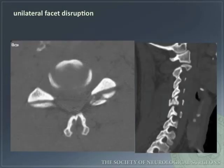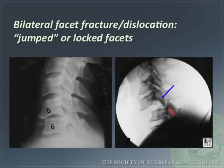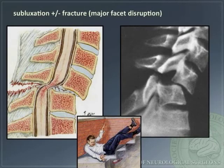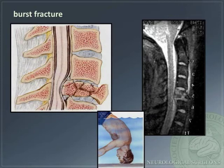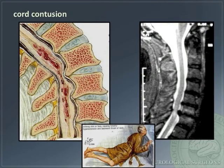Here is an example of unilateral facet disruption. Bilateral facet fracture dislocation may lead to jumped or locked facets, as seen on these images. Cervical spine subluxation, plus or minus fracture, and major facet disruption may occur with trauma — the mechanism is usually flexion. Burst fractures may occur with axial loading. Cord contusion may occur with trauma, typically via an extension mechanism.